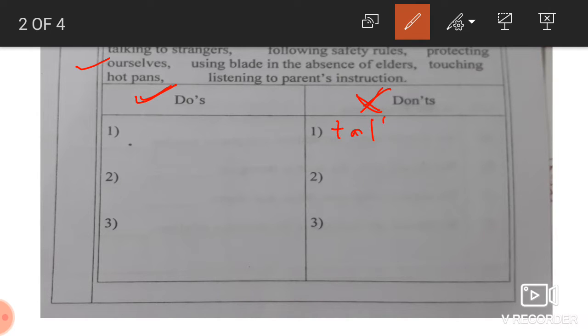So talking to stranger. Stranger means the person whom you don't know. It will be don't. Next one is follow safety rule. Yes, please follow the safety rule. Follow safety rules. It is not following, beta. Cut this ing. ing should not be there. It should be follow safety rules, it should not be following safety rules. Follow safety rules.